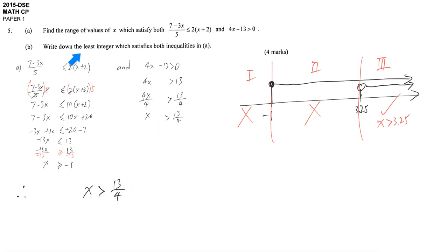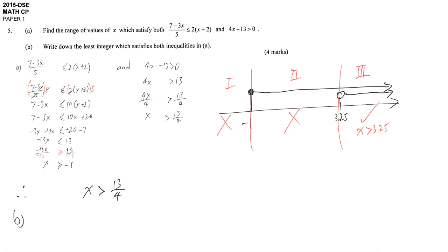And then in part B, we have to write down the least integer to fulfill the requirement. In this graph, we just need to focus on regions 3 and 2. So 3.25 means it's between 3 and 4.